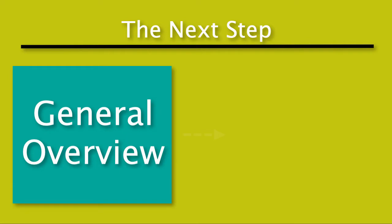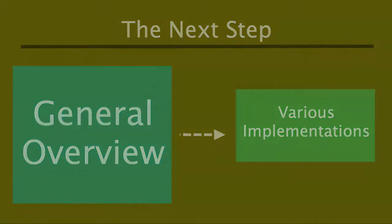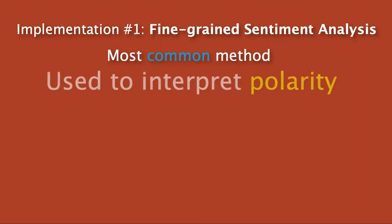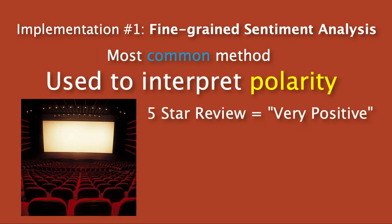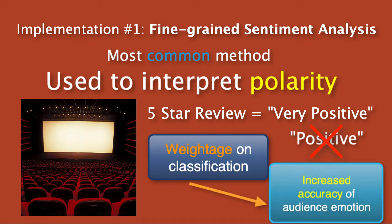Now that we have a general overview of this amazing tool, let's examine the different types and ways in which it is implemented. The first and most common method is fine-grained sentiment analysis, which is used to interpret polarity. For instance, looking back at our theater example, we could set a five-star review as very positive instead of simply being positive. This weighting on polarity helps businesses accurately determine and classify the extent of emotion within their audience.